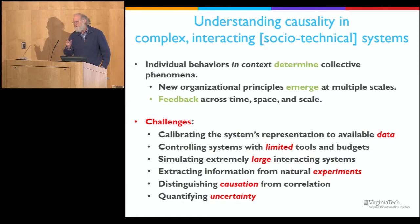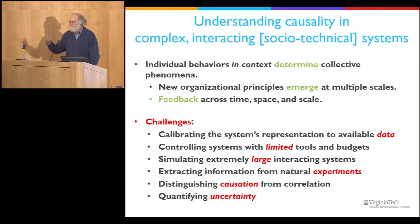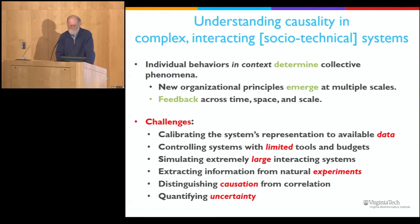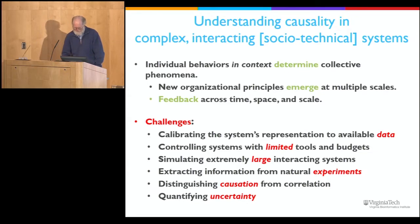The challenge presented to us by decision makers is typically: I have limited resources to affect changes in this system—how do I do it? What's the most efficient way to control the system with the limited resources I have? We find that we have to work on very large systems, trillions of interacting entities. We have constraints on the kinds of experiments we can do. In social systems, you can't just reach into a social system and do a randomized controlled trial. We need to understand how to extract information from natural experiments. And then there's the challenge everybody has: distinguishing causation from correlation and quantifying the uncertainty in our results.